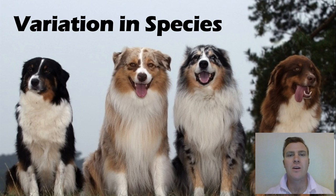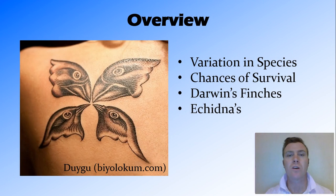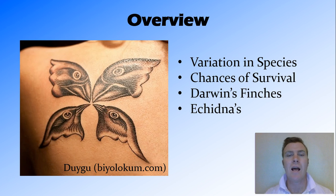Hi guys, in this video we're going to look at variation in species. We're going to talk about what variation in species is and what species have variation. We're going to talk about how this affects the chances of survival. And then we're going to look at a couple of examples — firstly, Darwin's finches in the Galapagos and an Australian example of echidnas.